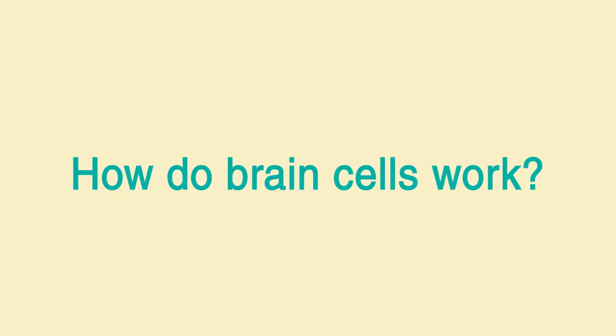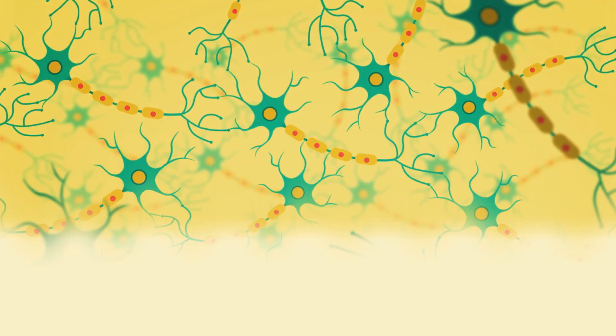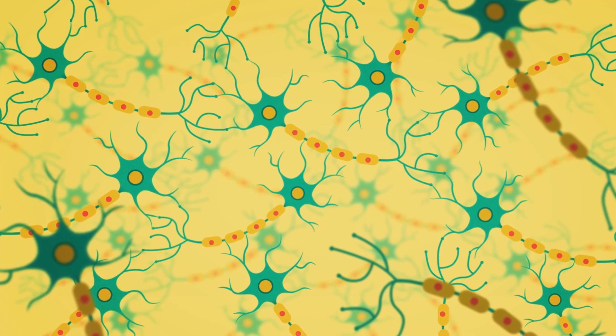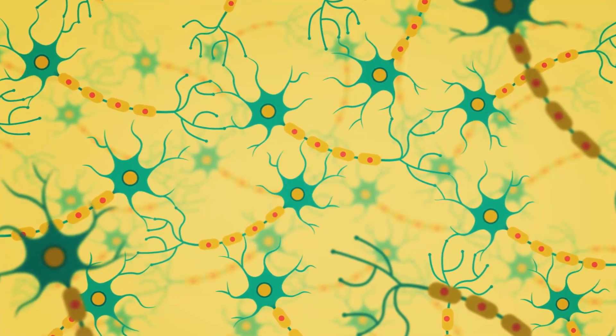How do brain cells work? The brain is made up of billions of nerve cells that are specially designed to communicate with each other.